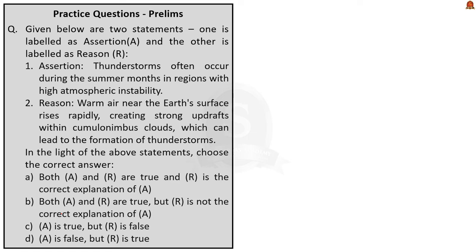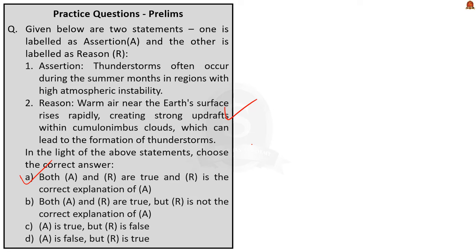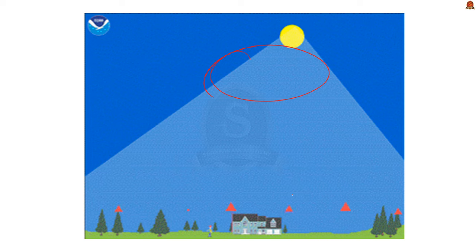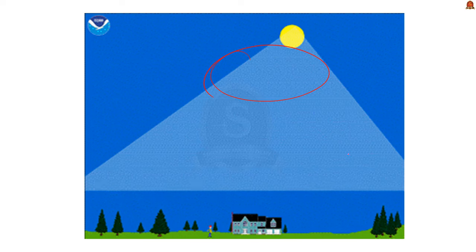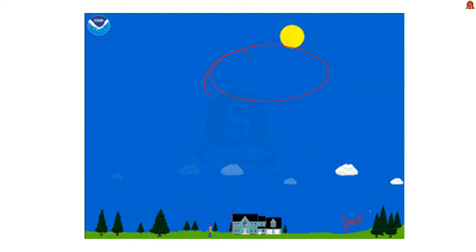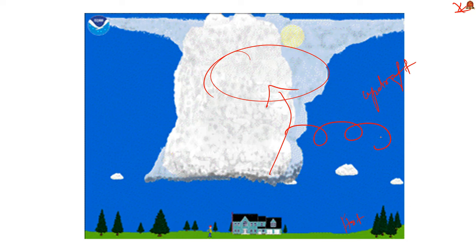The next question has an assertion and a reason; the correct answer is Option A — both assertion and reason are true, and the reason is the correct explanation of the assertion. Thunderstorms are caused by intense convection on moist, hot days — the assertion is correct. A thunderstorm is a well-grown cumulonimbus cloud producing thunder and lightning. When clouds extend to heights where sub-zero temperatures prevail, hail is formed. If there is insufficient moisture, a thunderstorm can generate dust storms. A thunderstorm is characterized by intense updraft of rising warm air, causing clouds to grow taller, which later leads to precipitation.